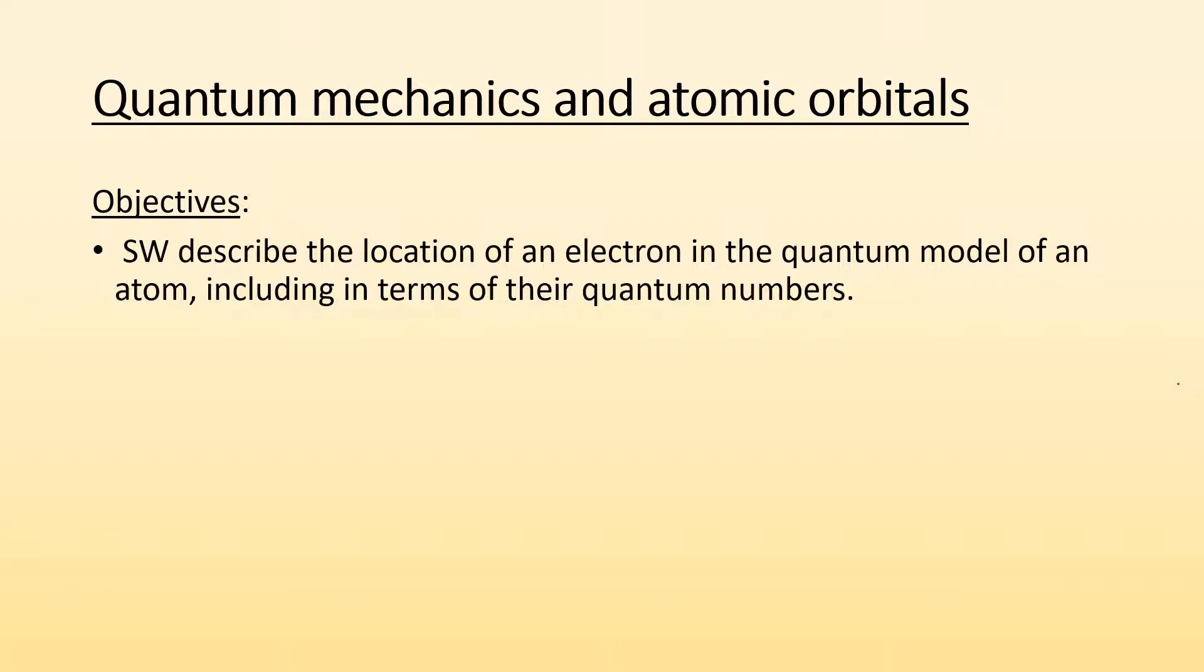How's it going ladies and gentlemen? Mr. Doniou here again. This time we're going to take a look at quantum mechanics and atomic orbitals. So our objectives will be to describe the location of an electron in the quantum model of an atom, including in terms of their quantum numbers. So we're going to get into some quantum stuff.